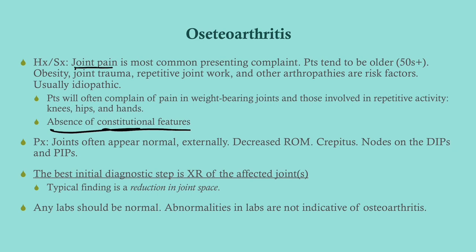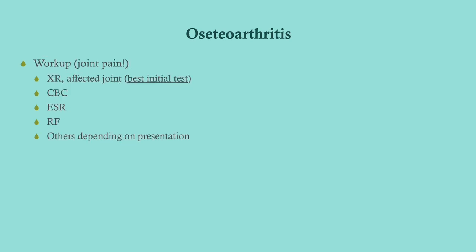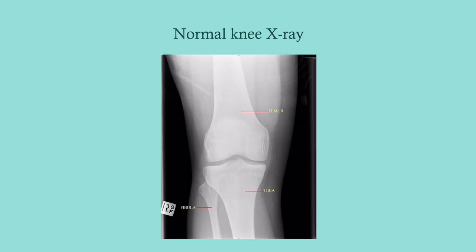On physical exam, pretty much everything appears normal; however, there may be a decreased range of motion due to pain, you may appreciate crepitus if it's particularly severe, and there are nodes that you can see as well. The best initial diagnostic step is an X-ray of the affected joints — generally the hips and knees. The typical finding is a reduction in joint space. Any labs you get should be normal. Work-up: X-ray of the affected joint, CBC, sed rate looking for inflammation, and an RF — then other labs depending on the presentation.